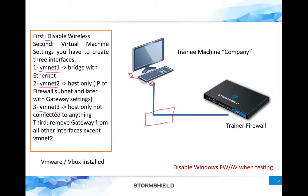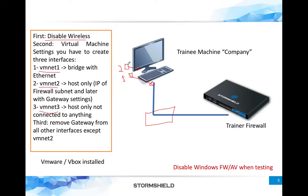VMNet2 will be a host-only network — a private network connected only to your laptop itself. VMNet3 will also be host-only but not connected to anything, creating an isolated private network. This third interface is not mandatory for the admin training but will be useful for future expert training as a DMZ subnet.